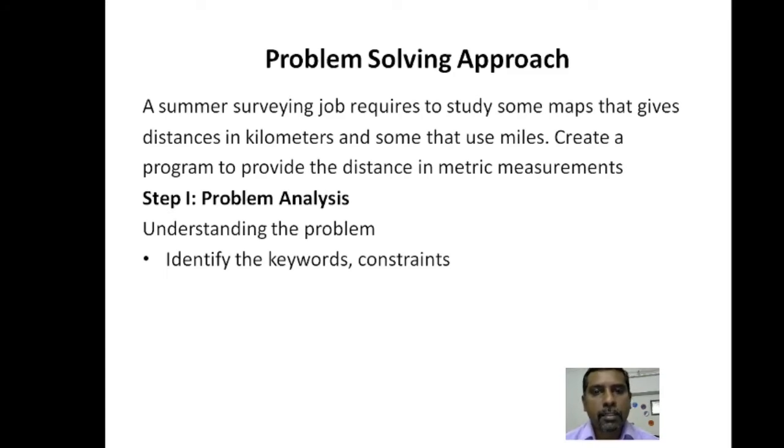Now, let us identify the keywords or constraints in this problem. So from the problem statement, we should be able to identify the keywords or constraints. This is the next step in our problem analysis. By this time, you will be able to say the keywords and constraints. For example, you will say the keyword is surveying job, kilometers, miles, and metric measurement. Here metric measurement is a constraint.